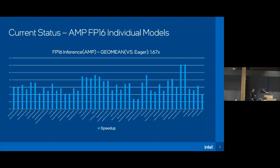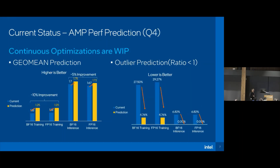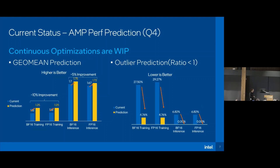With this first round of performance analysis, we have high confidence that we can improve performance in the next quarter. For training, we expect about 10% performance improvement. For inference mode, we expect about 5% performance improvement. In parallel, the outlier portion will be reduced significantly — for training, from about 28% down to about 5%, and for inference mode, we expect to find no outlier models at all.